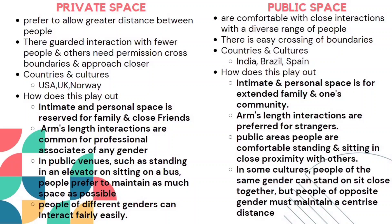There is easy crossing of boundaries — people may interfere in each other's spaces. Countries which follow this are India, Brazil, and Spain. How does this play out? Intimate and personal spaces are for extended family and one's community. Arms-length interactions are preferred for strangers — if you don't know someone, you maintain arms-length distance.